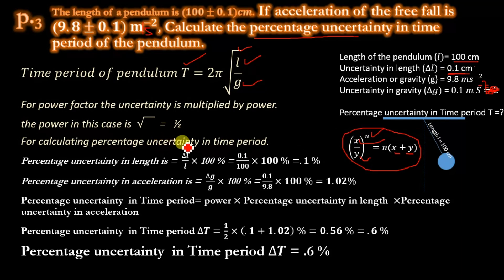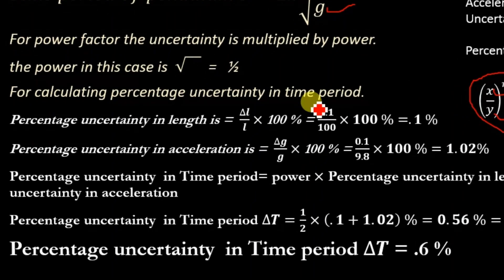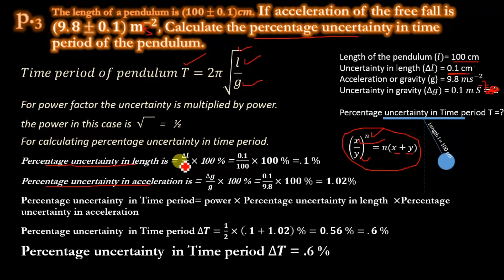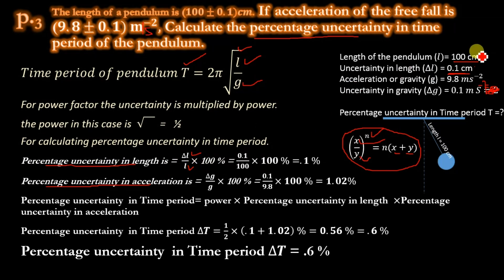For calculating the percentage uncertainty in time period, we first determine the percentage uncertainty in length: (δL / L) × 100%. δL is 0.1 cm and the measured value L is 100 cm. So, 0.1 divided by 100, multiplied by 100%, gives us 0.1%.